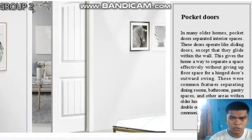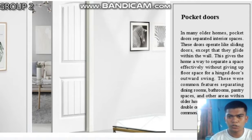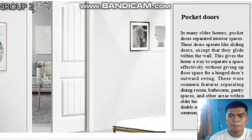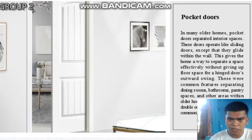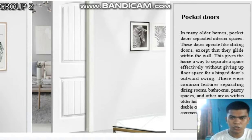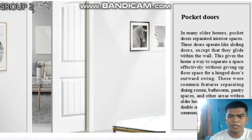The next type is pocket doors. In many older homes, pocket doors separated interior spaces. These doors operate like sliding doors, except that they glide within the wall, giving the home a way to separate a space effectively without giving up floor space for a hinged door's outward swing. They were common features separating dining rooms, bathrooms, pantry spaces, and other areas in older homes. These doors can be double or single, but are most commonly wood.